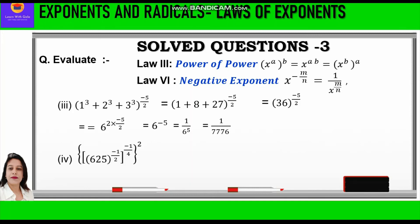Now let's start question number 4: 625 raised to power minus half, further raised to power minus 1 by 4, and further raised to power 2. Here 625 can be written as 25 squared. So we write 25 squared into minus half, further raised to power minus 1 by 4, into 2. We apply the third law — power of power — which says x raised to power a whole raised to power b equals x raised to power a into b, so we multiply the powers. The 2 and 2 cancel, and 4 cancels with 2.